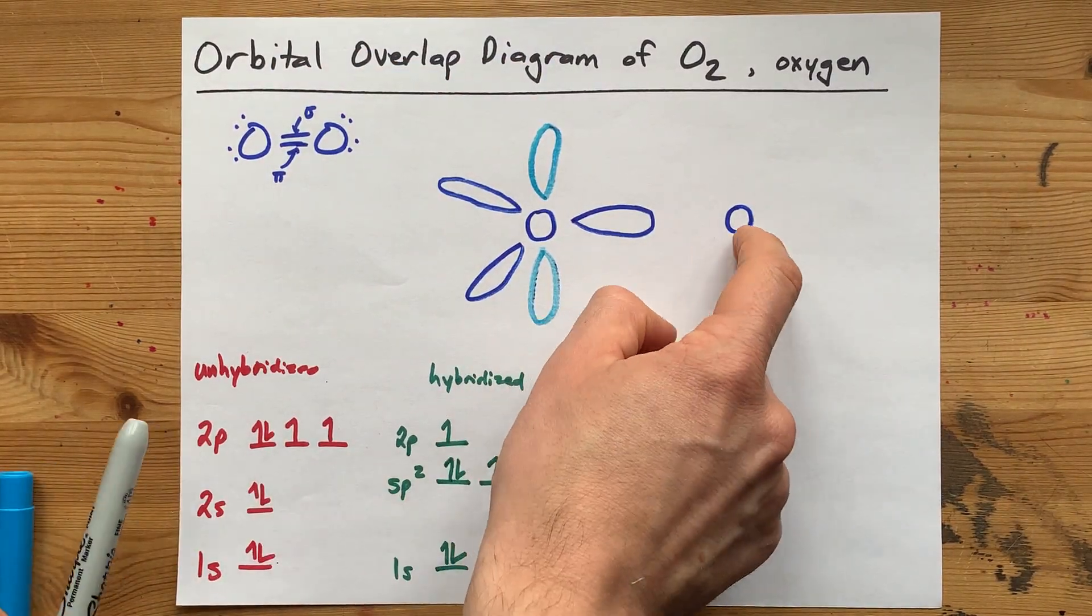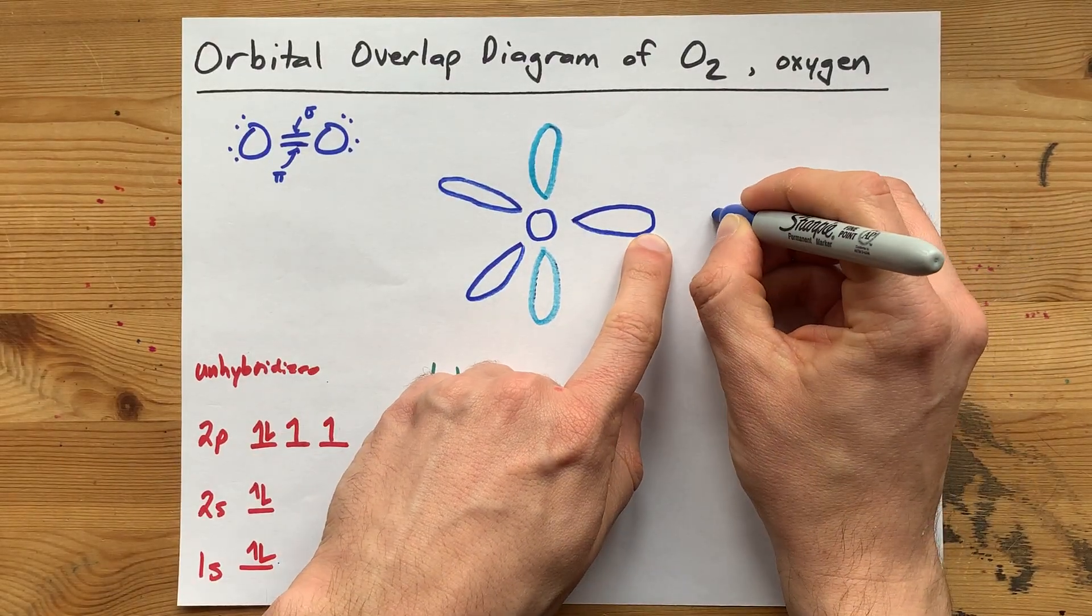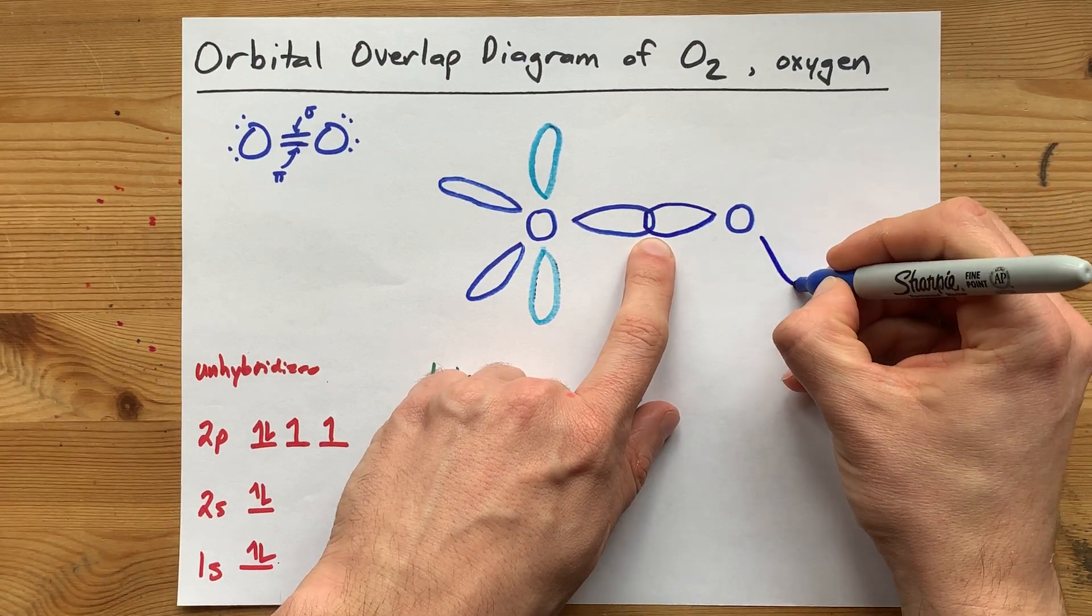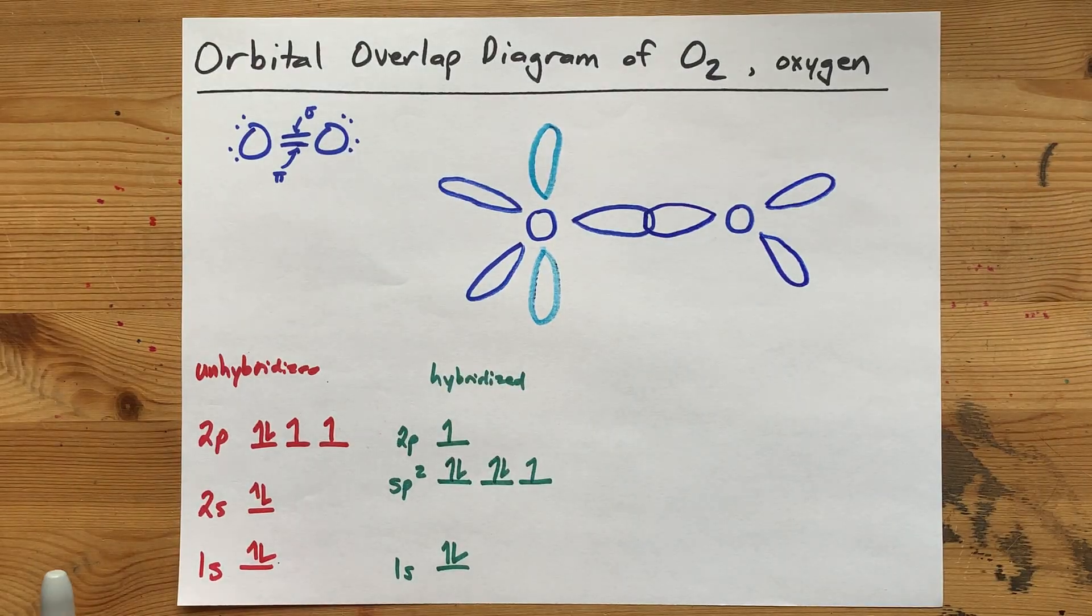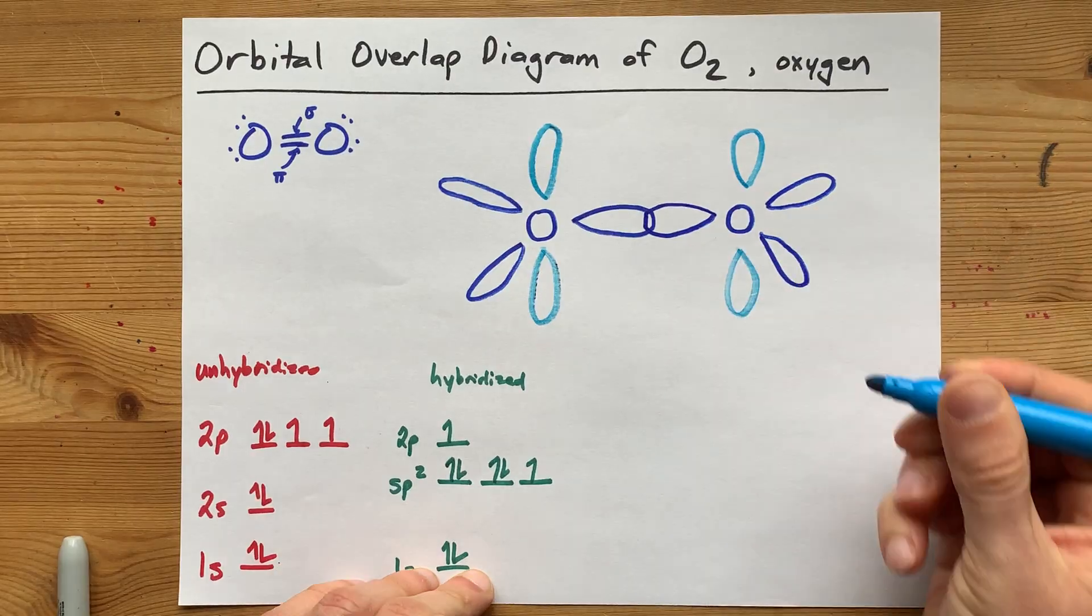Now, I have to do the same thing on this oxygen, so I'm just going to mirror it, and I'm going to make sure that my two balloons in the middle meet. That's going to be the sigma bond between the two. This one's coming out at you. This one's going back into the page. And I have a 2p orbital that goes above and below the bond axis here as well.